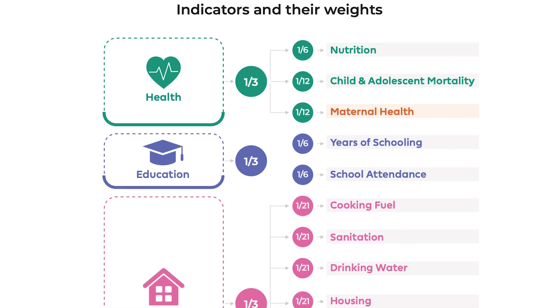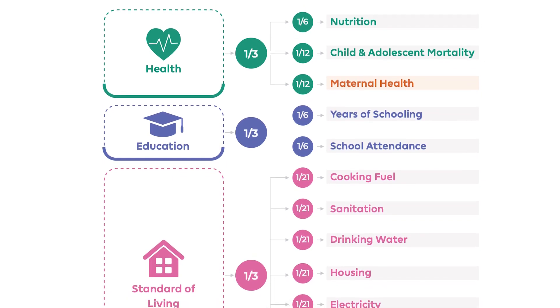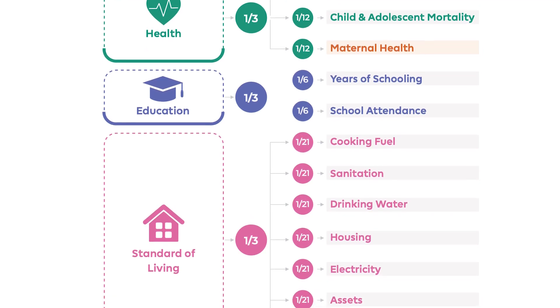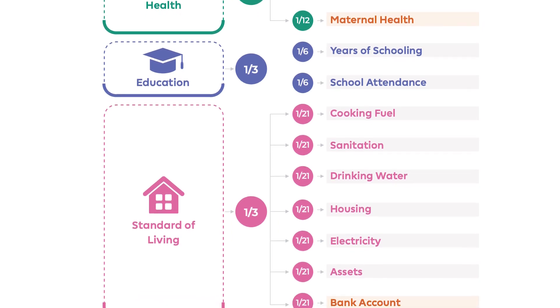These are the factors responsible for the encouraging figures. Which are the parameters used to conclude that poverty has declined? One is nutrition. The others are child and adolescent mortality, maternal health, years in school, and school attendance. A study in these areas was made to see whether poverty has declined or increased. It was found that 41.5 crore people have exited multidimensional poverty in the last 15 years.